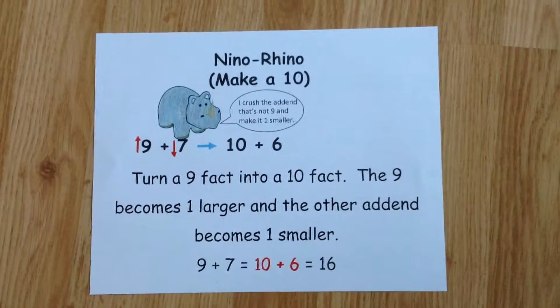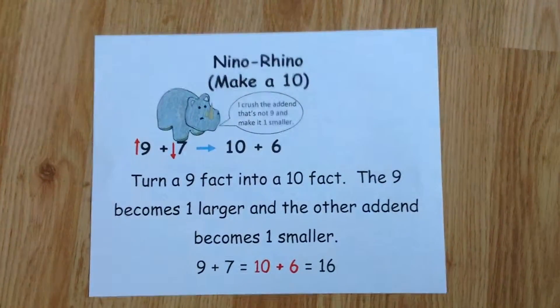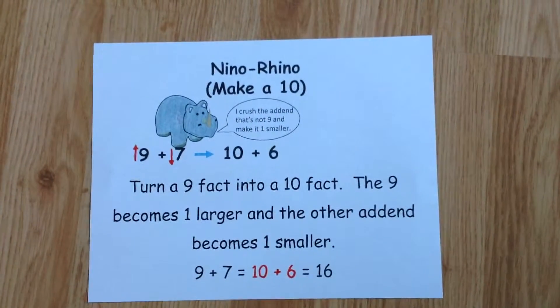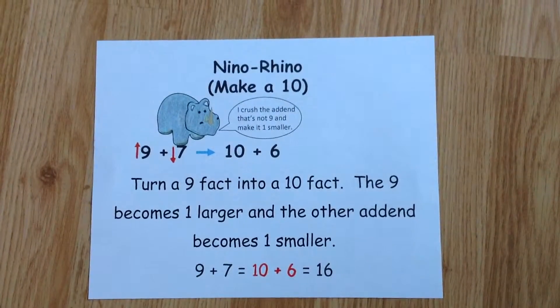The last strategy is called Nino-Rhino. It really is just make a ten. You're going to turn a nine fact into a ten fact. Then it's easier to solve.